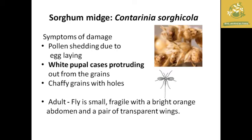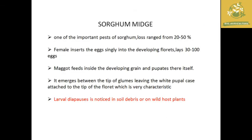Next is the sorghum midge, whose scientific name is Contarinia sorghicola. The major symptom is white pupal cases protruding on the sorghum florets, with white fatty web-like structures. Chaffy grains with holes are visible. The adult fly is small and fragile with a bright orange abdomen and a pair of transparent wings.